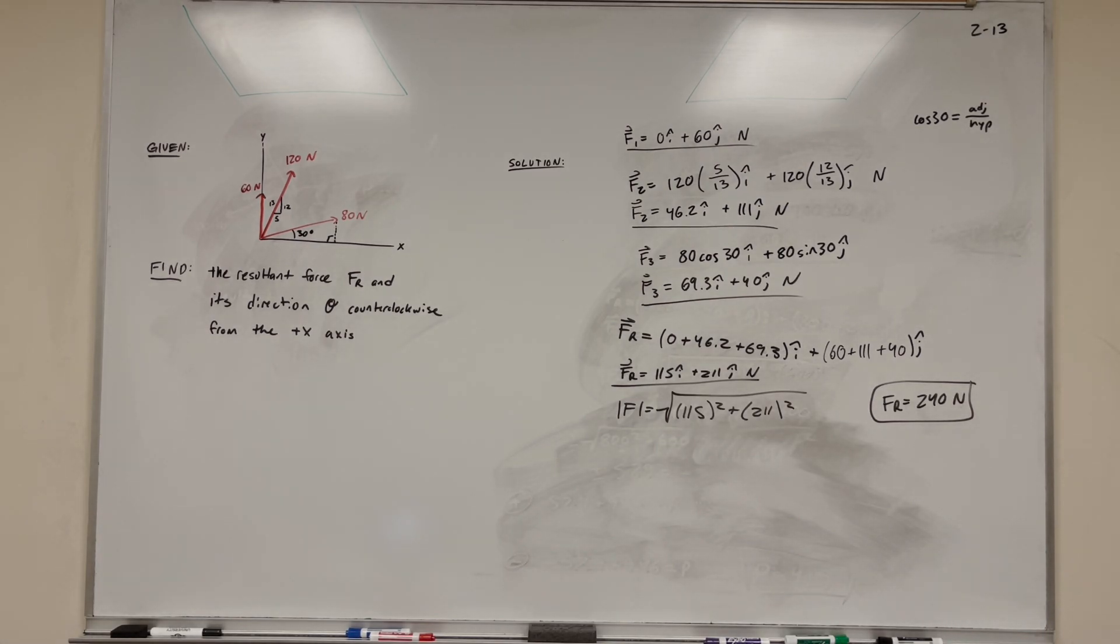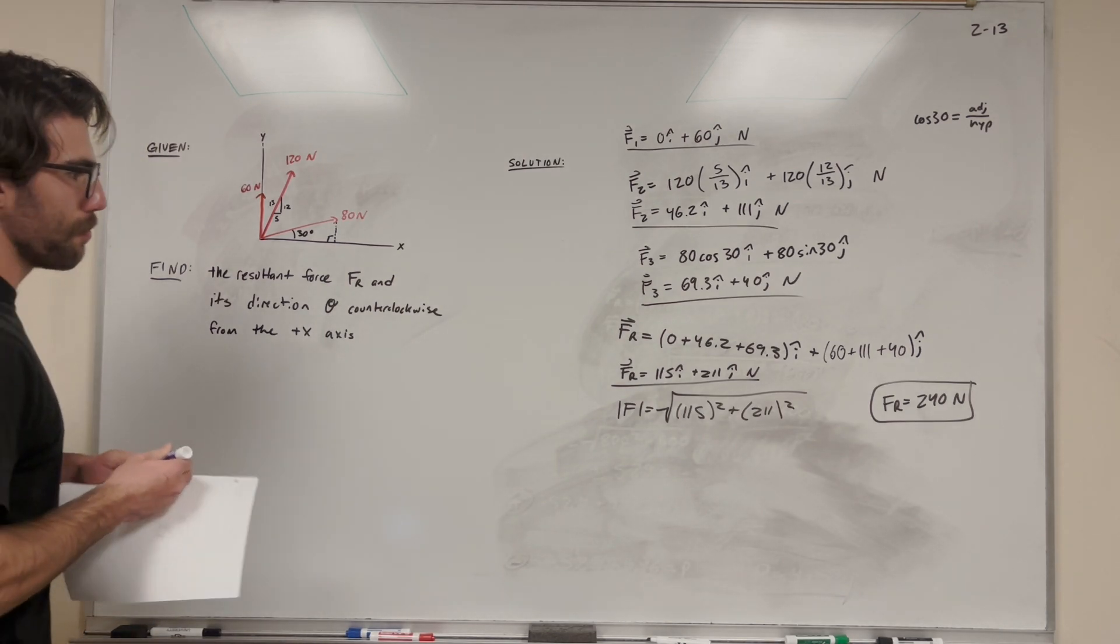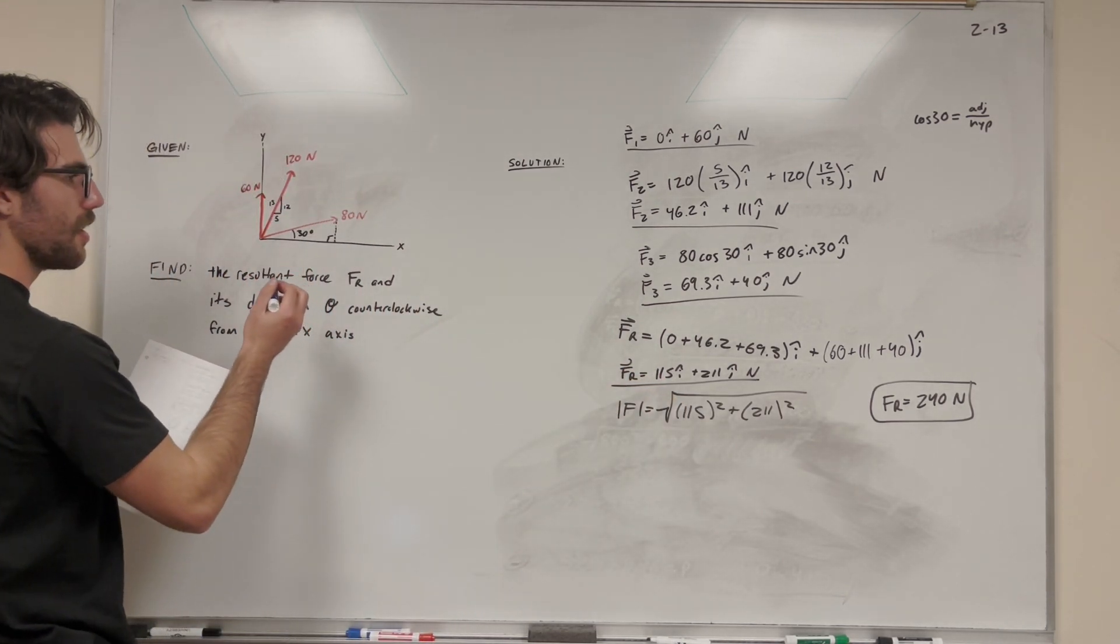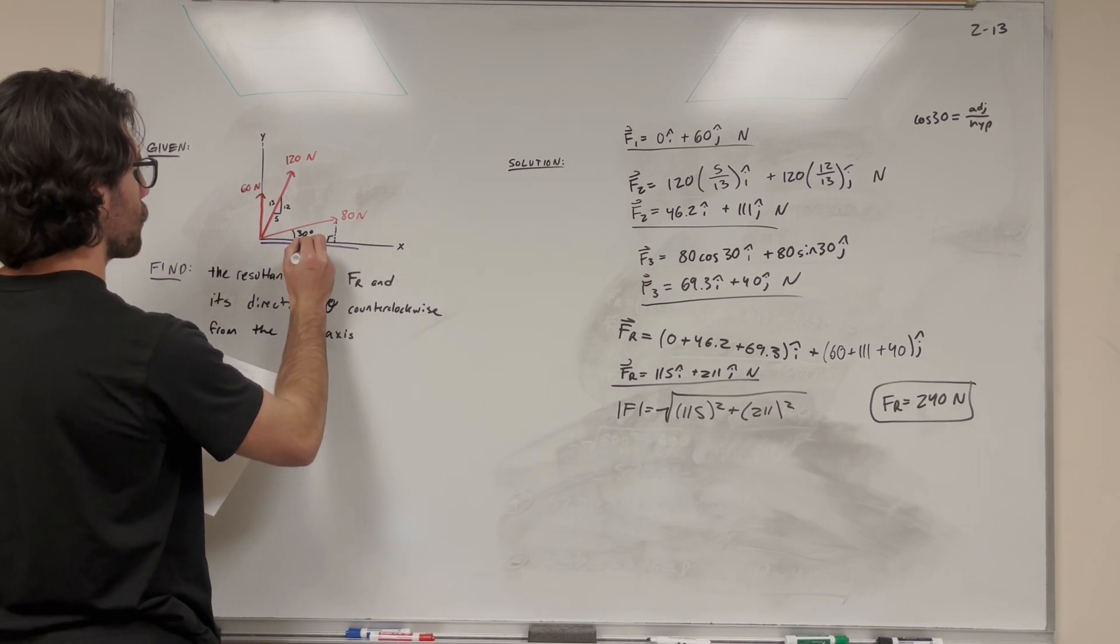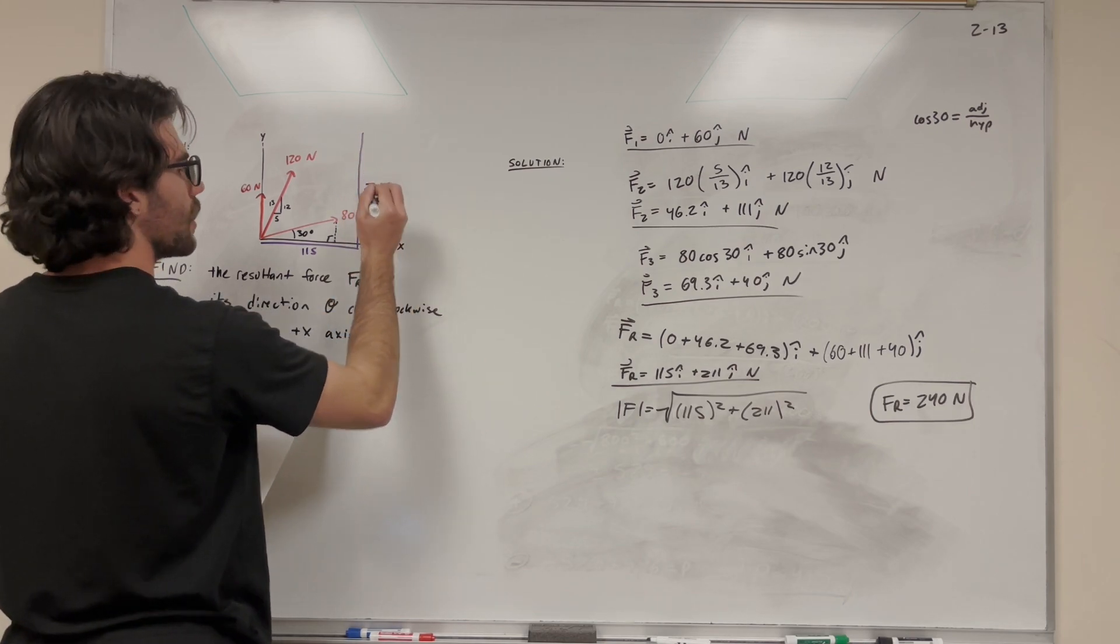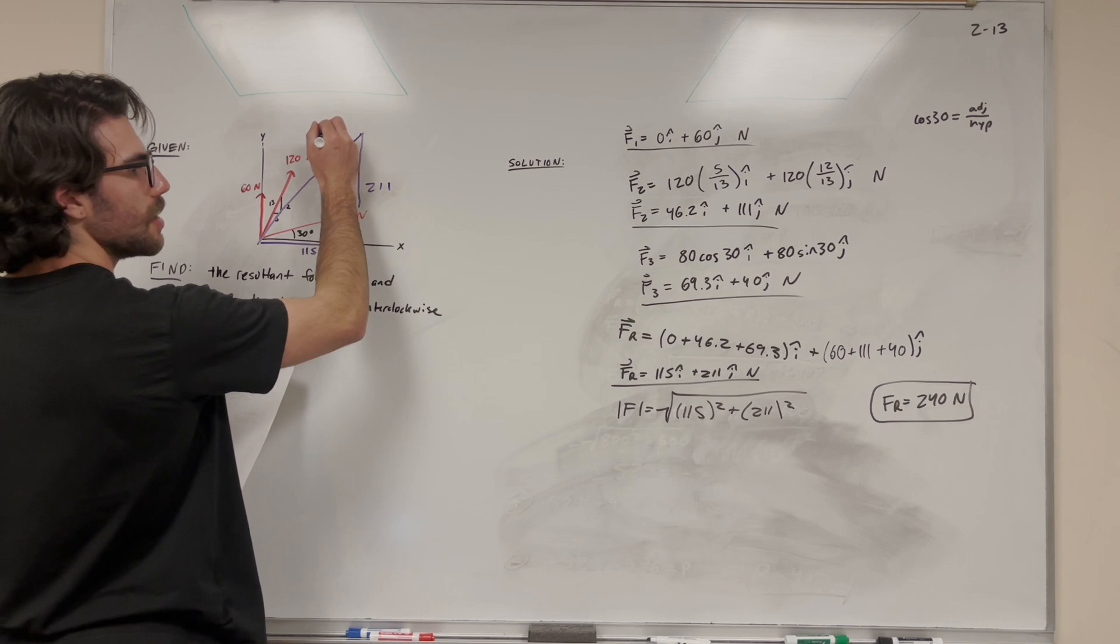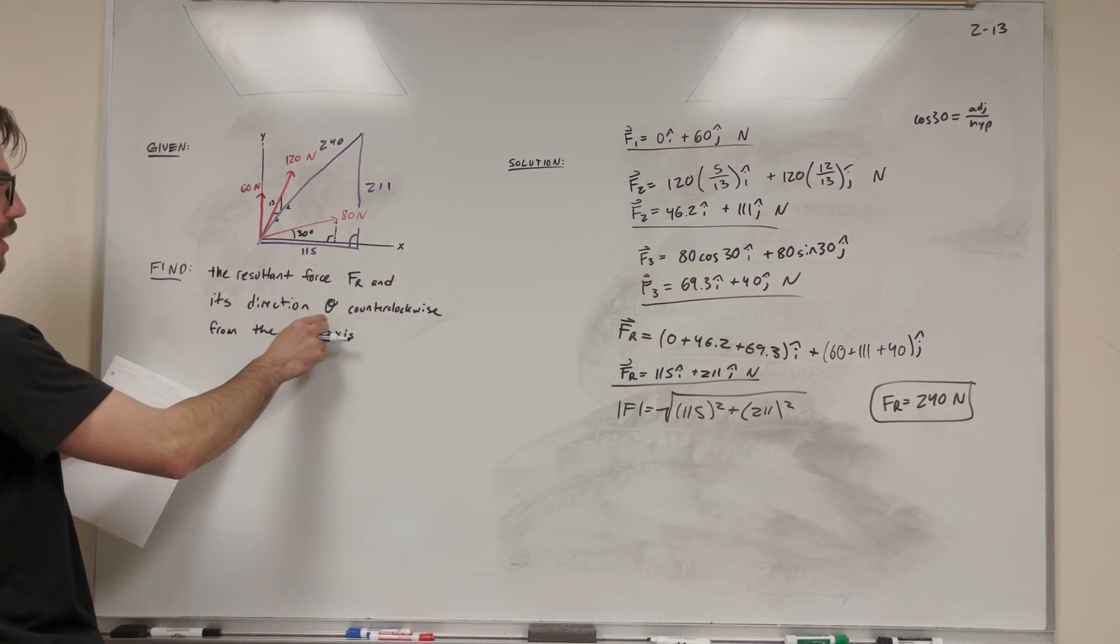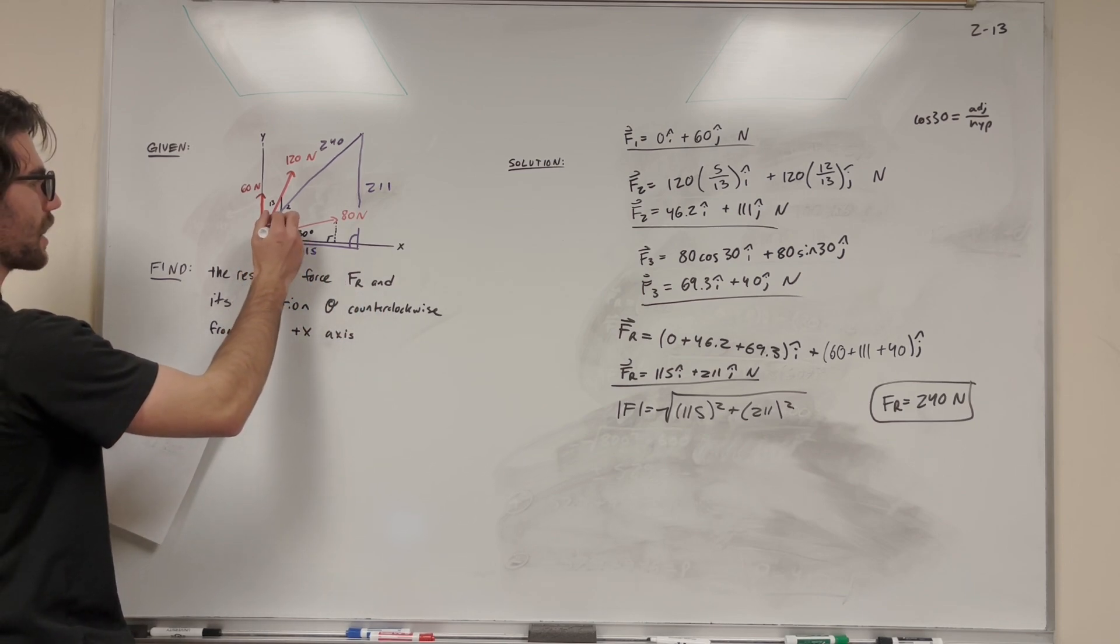So we can visualize this as a triangle if we want to. I'm going to go ahead and draw it over here. Alright, we have a base, an x component of 115. So it's going to look like 115, and then a height of 211. So it might look like this, 211. And its hypotenuse is here, and this is 240. So what it tells us is we're looking for the direction Theta counterclockwise from the positive x axis. So if we go counterclockwise from the positive x axis, we're just looking for that angle there.